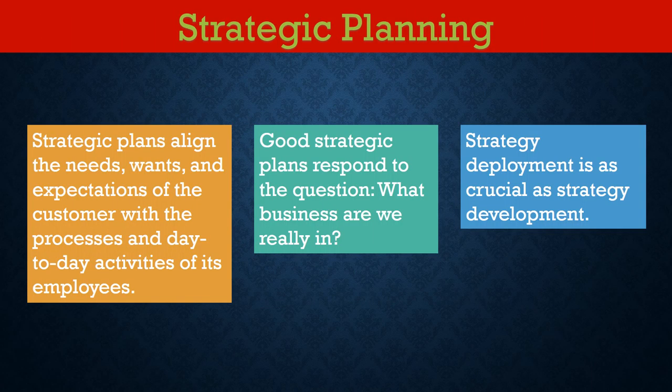Lean Six Sigma organizations recognize that good leadership combined with strategic planning and deployment maximize long-term organizational health. If good strategic planning is not practiced, a lot of bad things can happen. For example, goals are not known throughout the company, goals change too often, goals are not achieved, goals are achieved without real improvement, progress is not sustained, and organizational frustration exists.